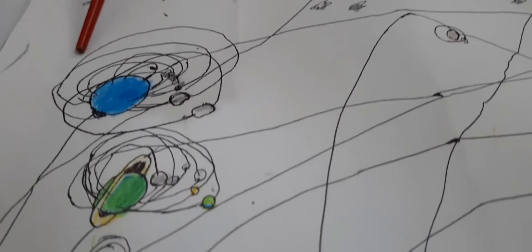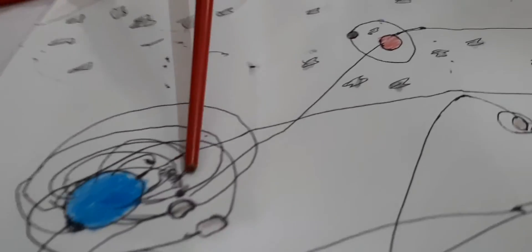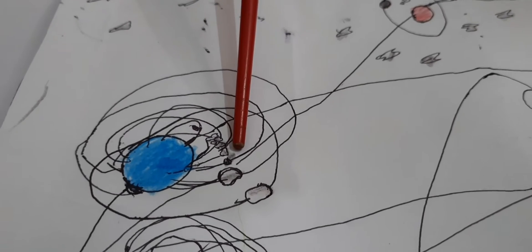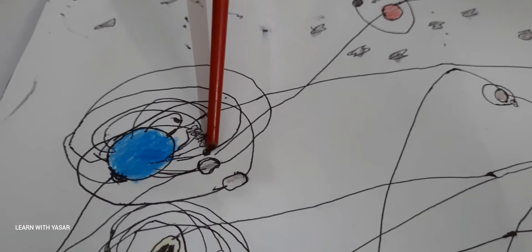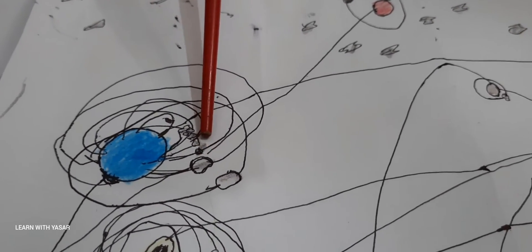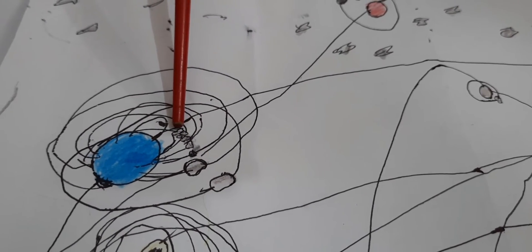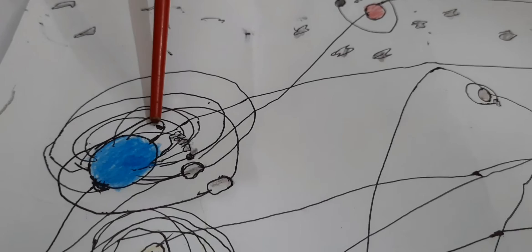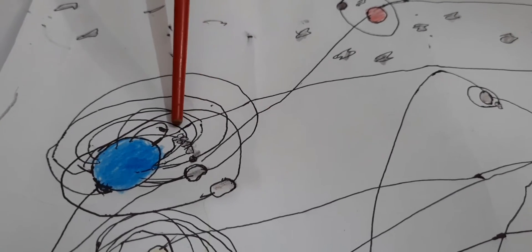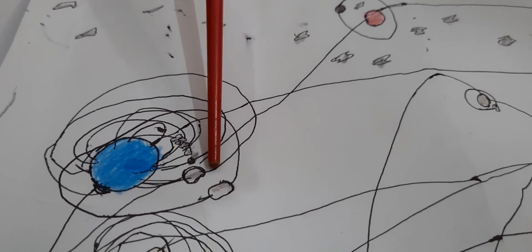Here's Neptune's moons. Proteus, Hippocamp, the smallest moon of Neptune. Larissa, Galatea, Despina, Thalassa, and also Naiad. And also Triton.